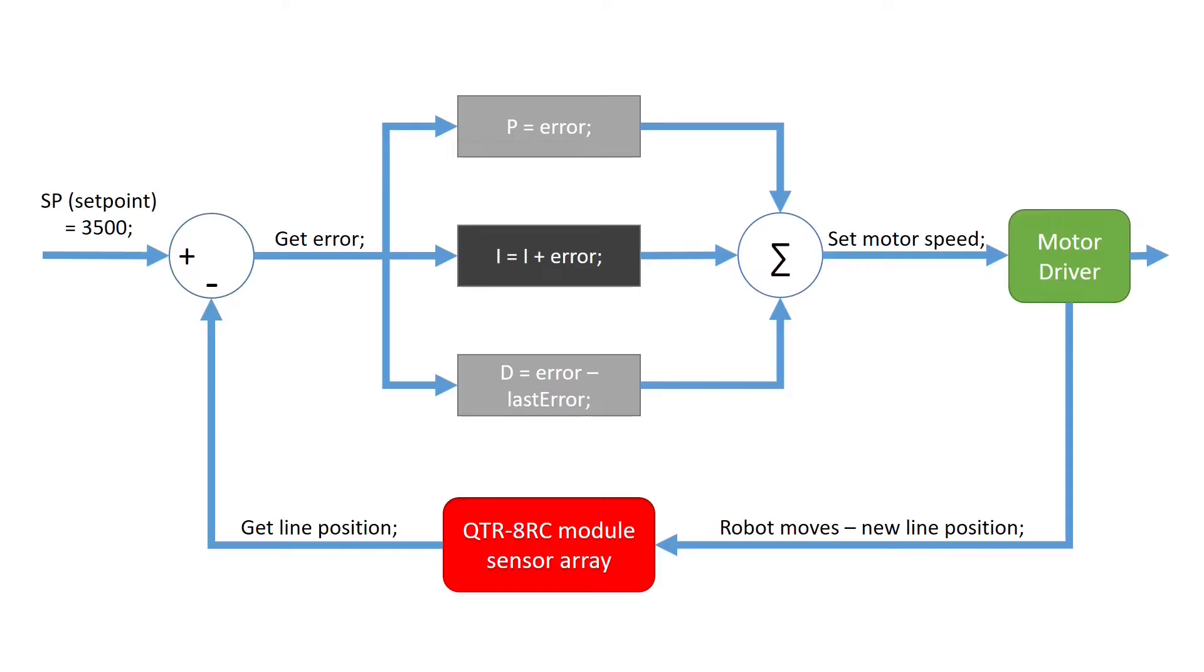In short, it represents the sum of all errors over time and gives the accumulated offset that should have been corrected previously. As mentioned earlier, it improves but it doesn't change the control system. To remove the oscillations of the robot, we need another control term whose role will be correcting these errors.